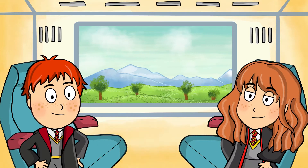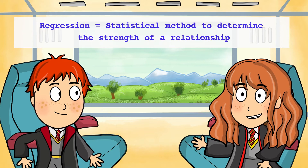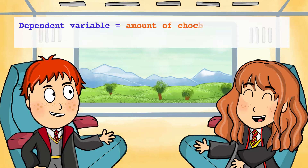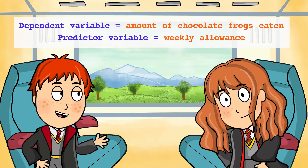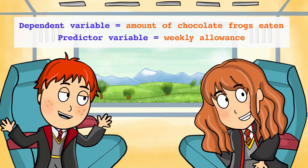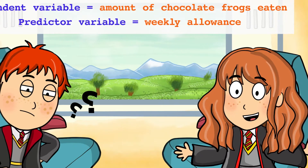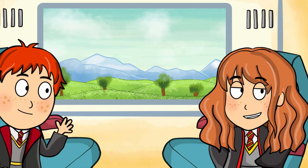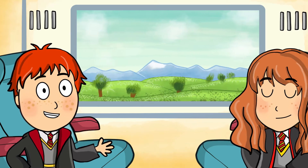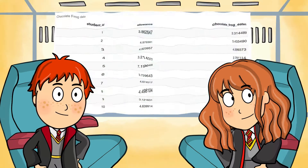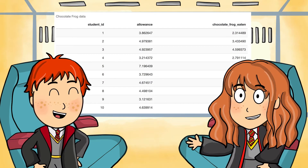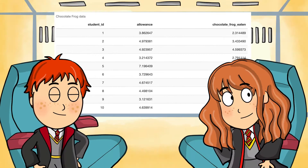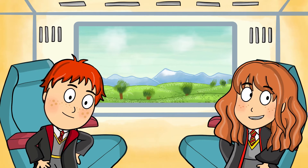What's regression? Regression is a method used to investigate the strength of a relationship between one dependent variable and other independent variables. So, the number of frogs bought and eaten can be a dependent variable because it depends on the allowance that a student receives. You're assuming that students who receive a higher weekly allowance from their parents will have more galleons to spend on chocolate frogs. I went around the cabin to collect some data that we can use for linear regression. We have three columns in this dataset: student identifiers, weekly allowance, and the number of chocolate frogs eaten per week. First, let's check if the data meets the assumptions of a linear regression.